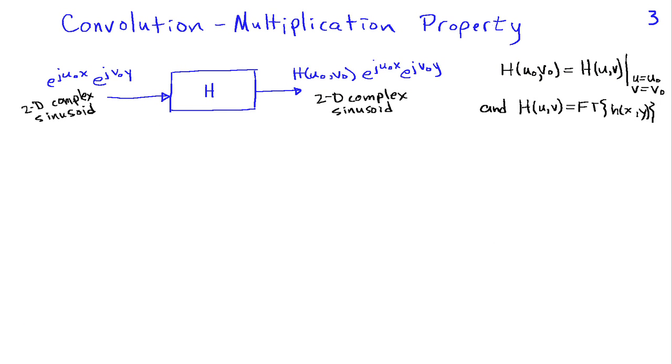Now most of the standard Fourier transform properties can be easily extended to two dimensions. One that's particularly interesting for us is to look at the convolution multiplication property. And this follows from two-dimensional convolution and the relationship with two-dimensional Fourier transforms. And it turns out that if you take a system H and you apply an input of a two-dimensional complex sinusoid that has frequency u-naught in the X direction and v-naught in the Y direction,